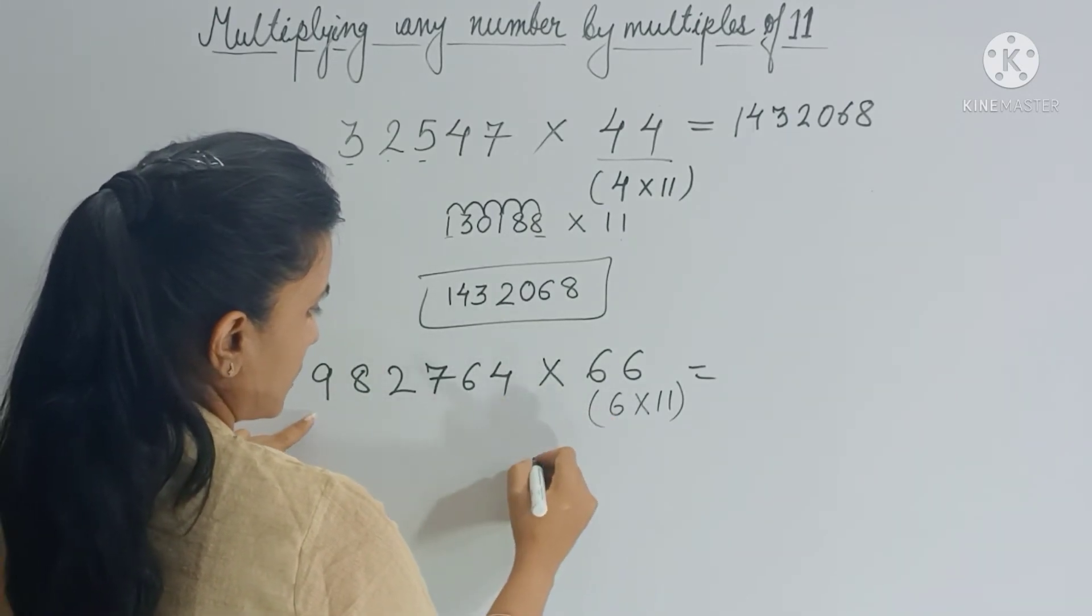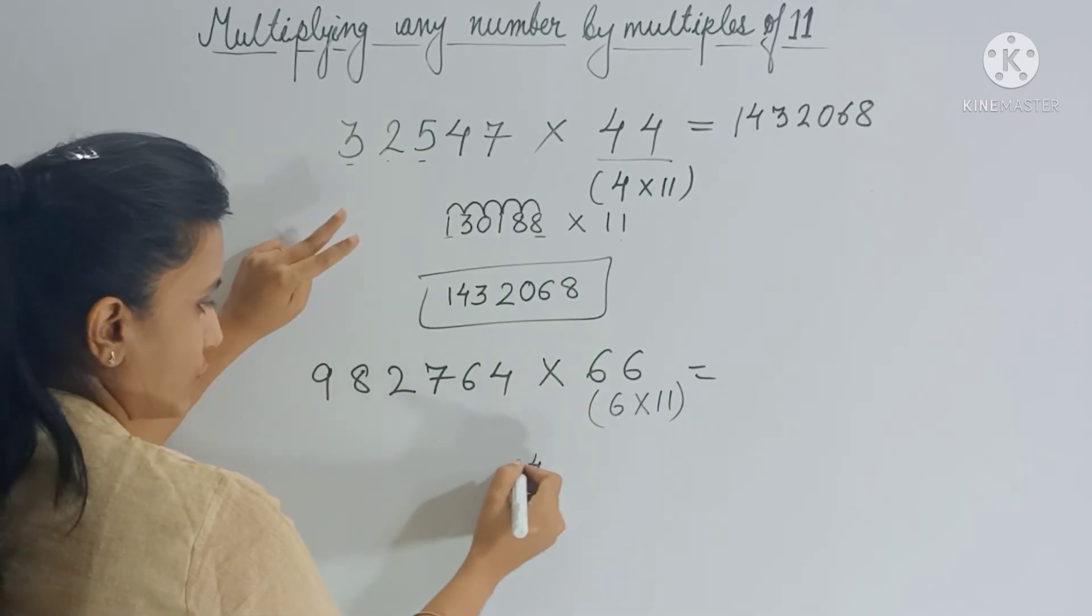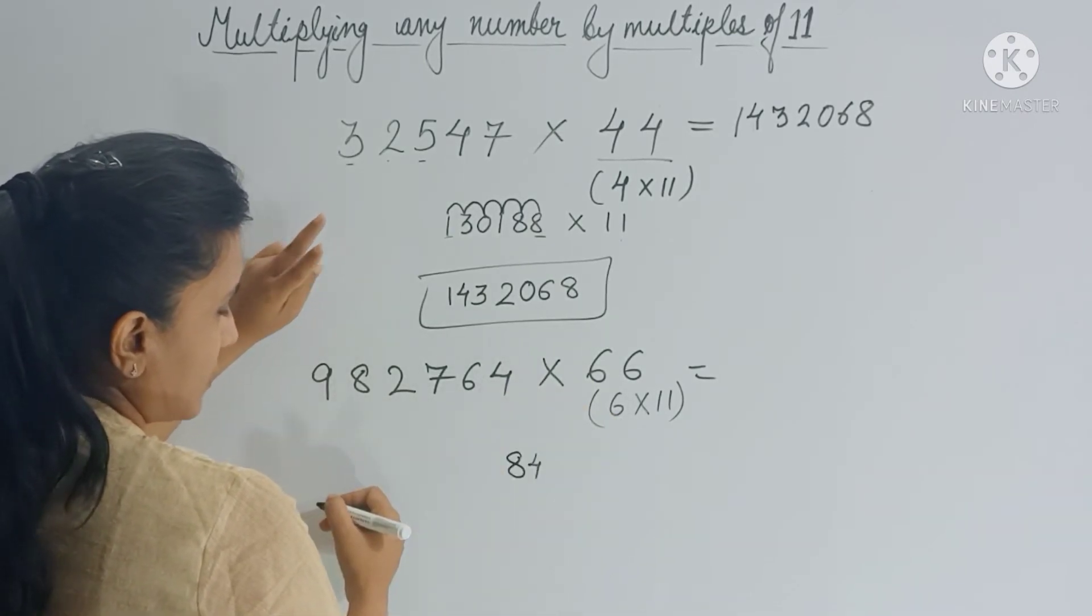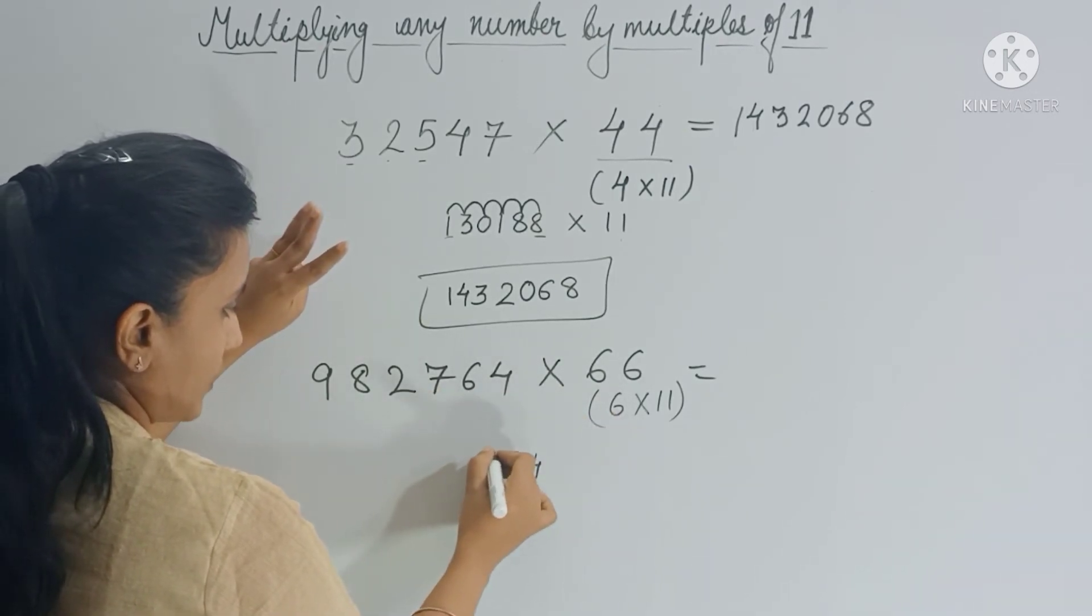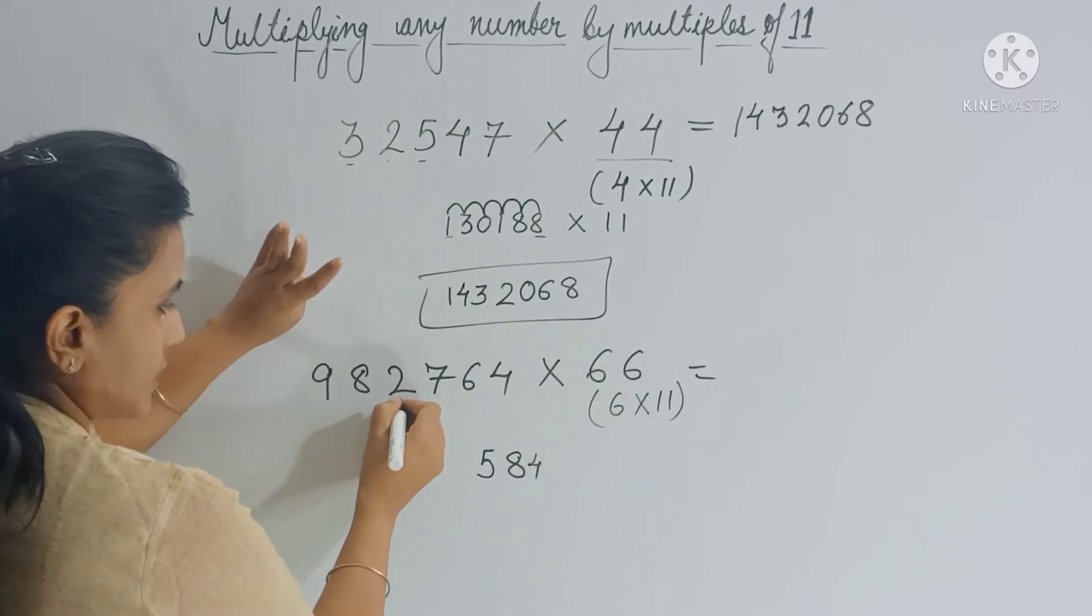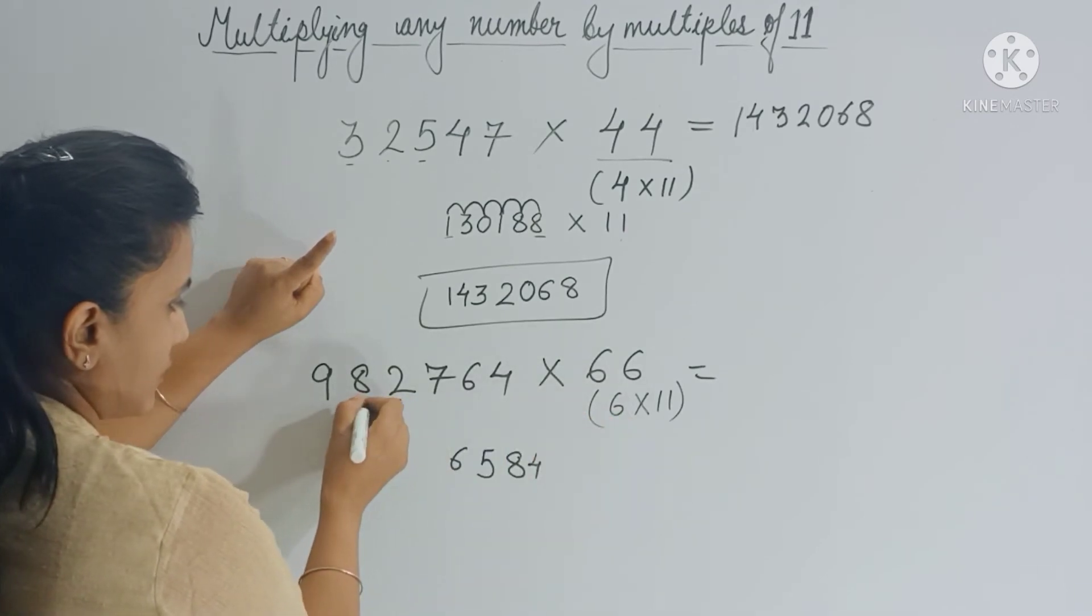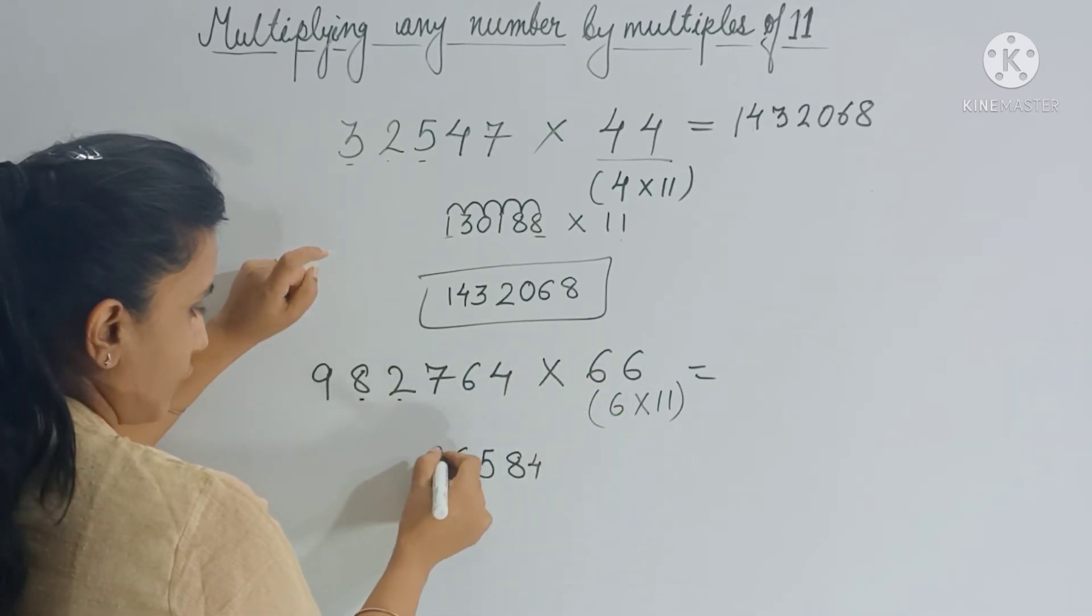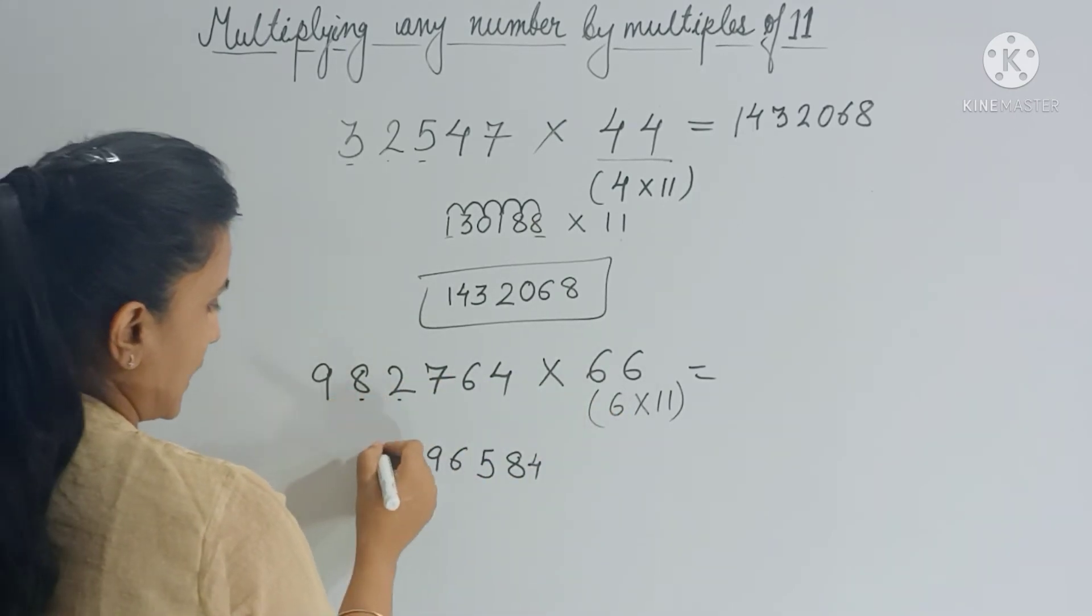So 6 times 4 is 24, 2 is carry forward. 6 times 6 is 36 plus 2 is 38. Again 3 is carry forward. Now 6 times 7 is 42 plus 3 is 45, so 4 is carry forward. 6 times 2 is 12, 12 plus 4 is 16, so 1 is carry forward. 6 times 8 is 48 plus 1 is 49, 4 is carry forward. 6 times 9 is 54 plus 4 is 58.